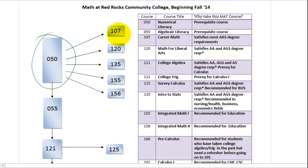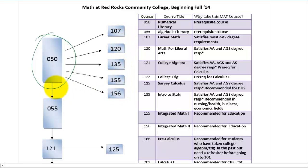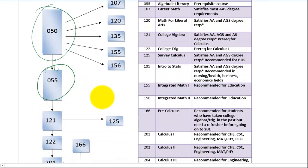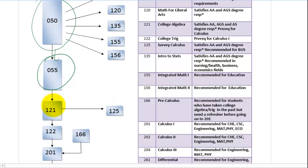If your last math class is going to be 107, 120, 135, 155, or 156, you can go straight to that class from Math 050. If your degree requires any class other than these math classes, then your next class is going to be Math 055. Once you're in Math 055, the decision is easy. Your next math class is going to be Math 121, which is college algebra.